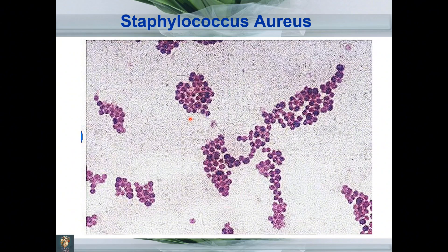This is a very common and important slide showing a gram-positive bacterium — gram positivity shown by purple color. You can appreciate a round shape, meaning these are cocci. Looking at the arrangement, these cocci are arranged in irregular clusters with a grape-like cluster appearance. Whenever you see gram-positive cocci in clusters, your diagnosis is Staphylococcus aureus.